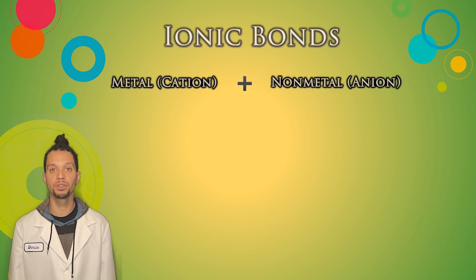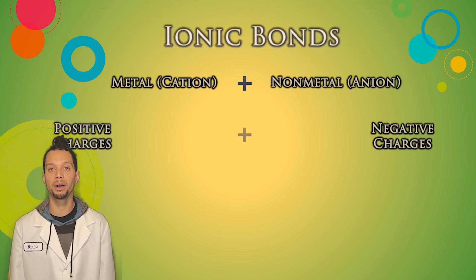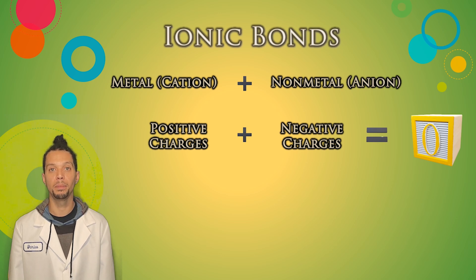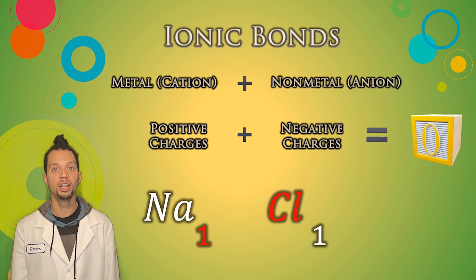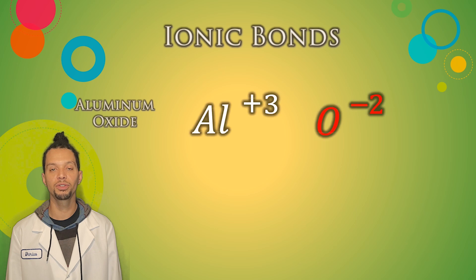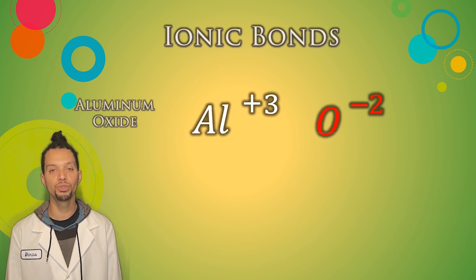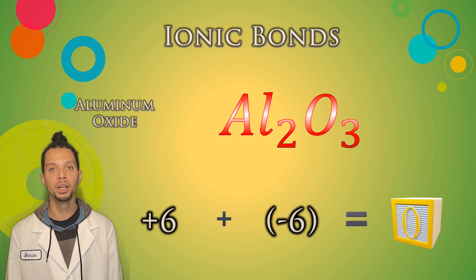In the names of ionic compounds, we do not use prefixes for the number of atoms. Roman numerals are used when a transition metal is the cation, but most importantly, the total net charge of the overall compound is neutral. So that means the sum of the positive charges and negative charges that come from the cations and anions must equal zero. A nice trick you can use to determine the number of cations and anions in an ionic compound is to write out the chemical symbols and oxidation states of each ion, and then use a criss-cross method with just the numbers to see how many of each are needed to offset the positive and negative charges. For the ionic compound aluminum oxide, each aluminum cation carries a plus three charge, while each oxygen anion has a minus two charge. So after criss-cross, we see that it takes two aluminum atoms to cancel out and offset the negative charges from the three oxygen atoms, giving us a final chemical formula of Al2O3.